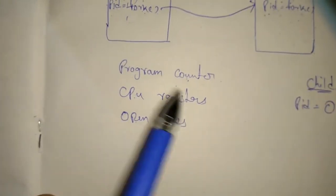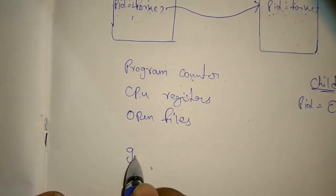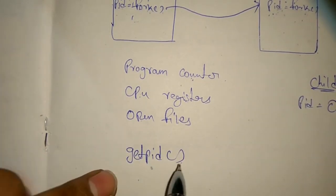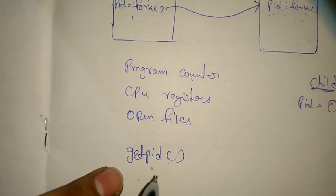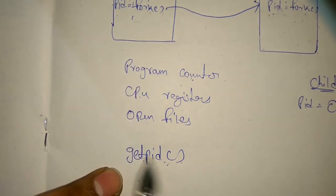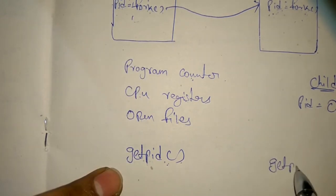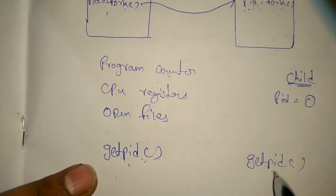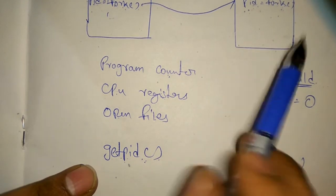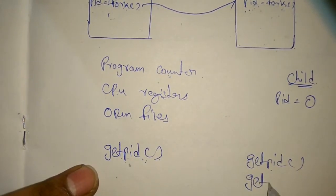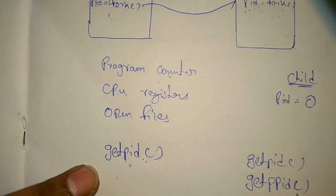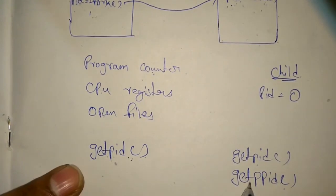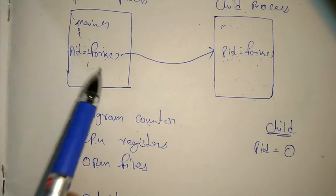To know the process ID of the parent and child, there is a system call called getpid(). getpid() will return the process ID of the process which is executing it. So if you run getpid() in the parent process, you'll get the process ID of the parent. If we run getpid() in the child process, we'll get the PID of the child process. To know the process ID of the child's parent, there is one more system call called getppid(). getppid() will return the process ID of the parent. So when we execute getppid() in the child process, we'll get the process ID of the parent.